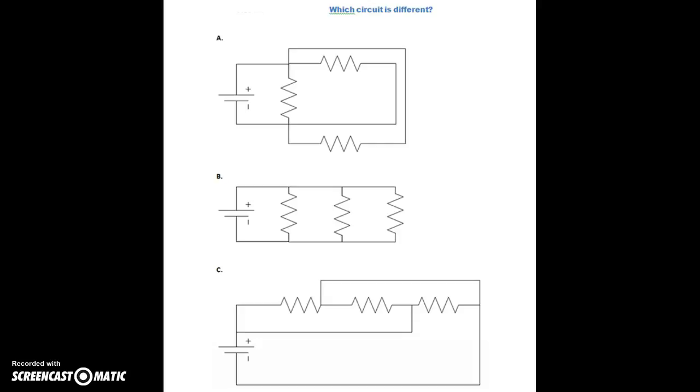Alright guys, this is example number five. If you don't have a copy of this, you can always go to the website and download it. There's a link to the website on the YouTube channel. This is example number five, and it's just some series parallel combinations, or what we think is series parallel combinations. We're going to see which one is actually different. So pause the video here and see if you can figure out which one is different, whether it's A, B, or C.